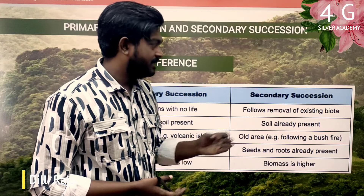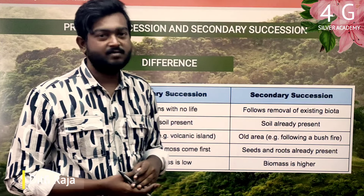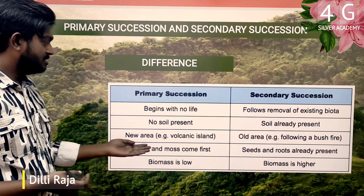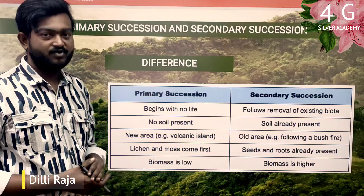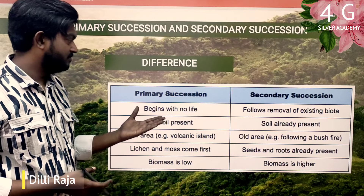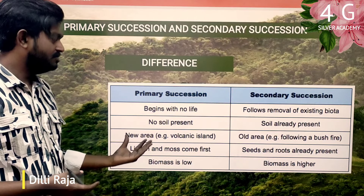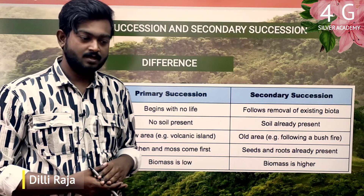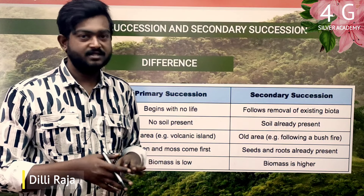This is an old area. In primary succession, lichens and moss come first as pioneer species. A seed is then introduced into this environment.